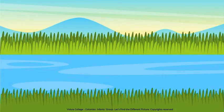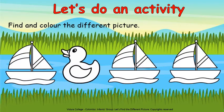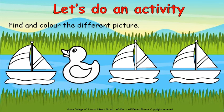Children, since you all are very clever, I know it is very easy for you to find the different picture now. So, shall we do an activity? Find and colour the different picture. Children, can you all see these four pictures? There is a boat, a duck, again there is a boat and there is another boat. The three boats look similar. But does the duck look similar to the boats? No. Then, what is the different picture here? The duck. Can you all see I coloured the duck? Because the duck is the different picture here.